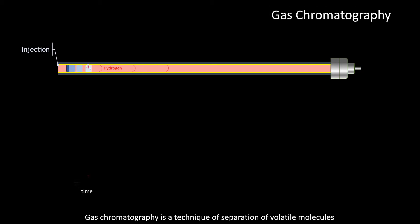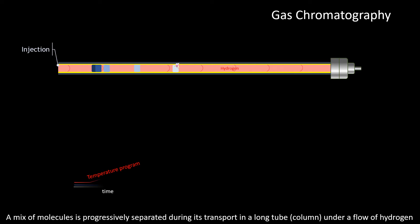Gas chromatography is a technique of separation of volatile molecules. A mix of molecules is progressively separated during its transport in a long tube column under a flow of hydrogen.